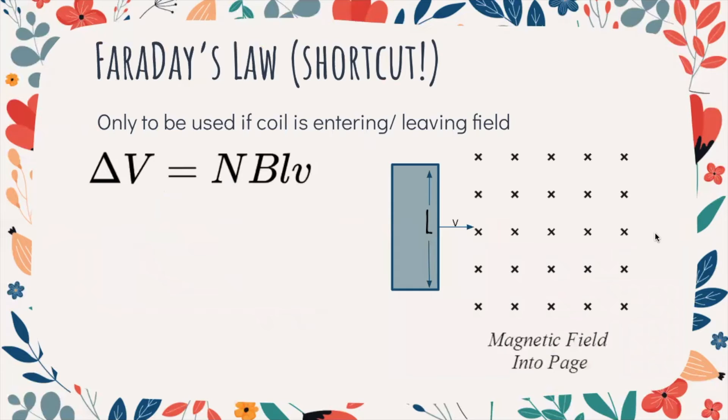All right. So last thing to close up then. What are you going to have to do with this? Even though you don't have to use Faraday's law big equation, I'm going to expect you to use the shortcut equation. This equation is a shortcut, but it has a little caveat to it. You can only use it two times. You can only use it if your coil is either entering the field or leaving the field. And let me show you why.